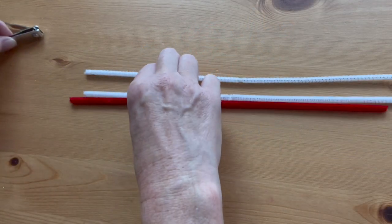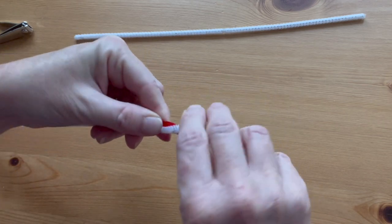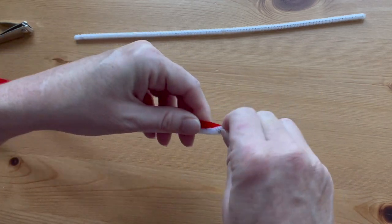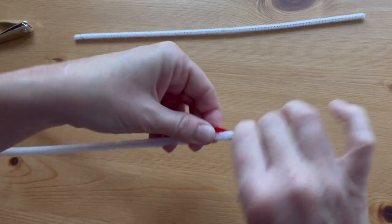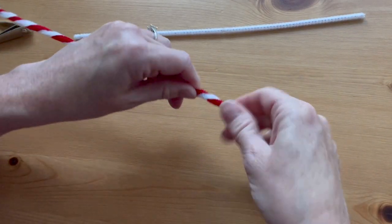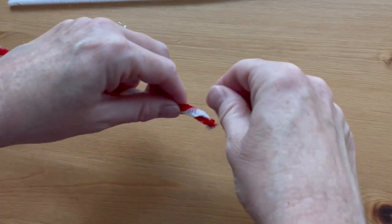For the large starlight mint, you'll need two white and one red pipe cleaners. Take one red and one white pipe cleaner and twist them together from the top all the way down to the ends. Start at one end.